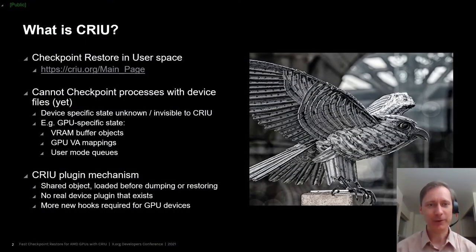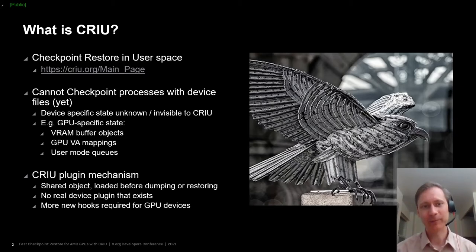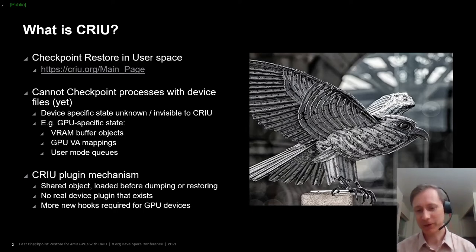So what is CRIU? CRIU stands for checkpoint and restore in user space. It's an open source project supported by the Linux kernel community that provides functionality to save the complete state of a running process, including its open file descriptors, its memory contents, and so on in image files on the file system, and then restore those on the same system or on a different system, which is useful for process migration, container migration, forensics, debugging, and all sorts of use cases.